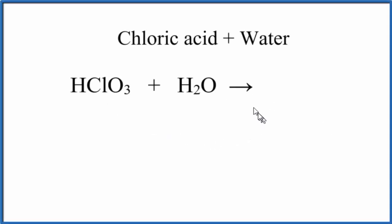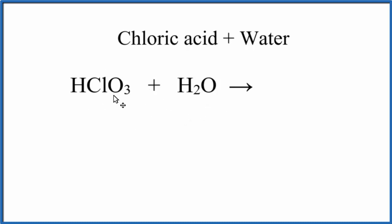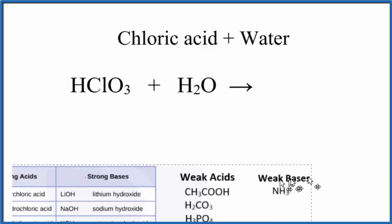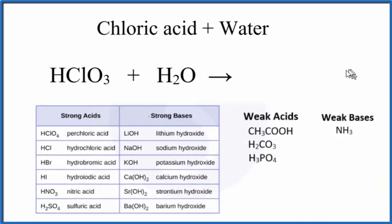In this video, we'll look at what happens when we have HClO3 in water. The first thing we need to know is that HClO3, chloric acid, is a weak acid. We can determine that by memorizing the strong acids. Here's a list of our strong acids, and we don't see HClO3 — we see HClO4, but no HClO3. So this must be a weak acid.